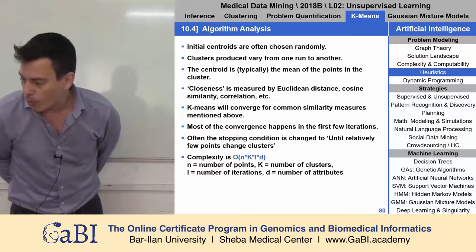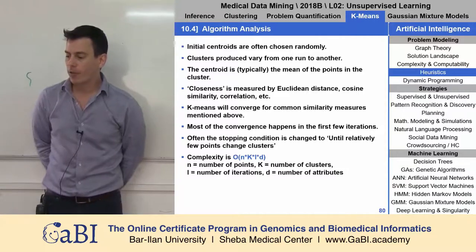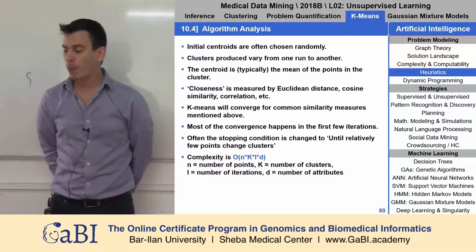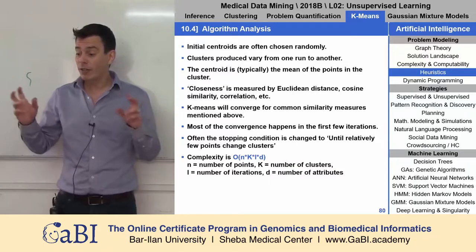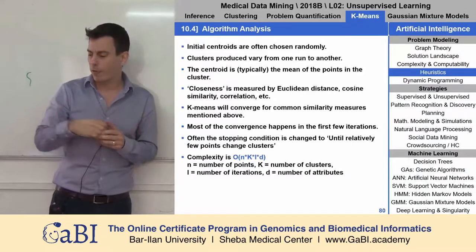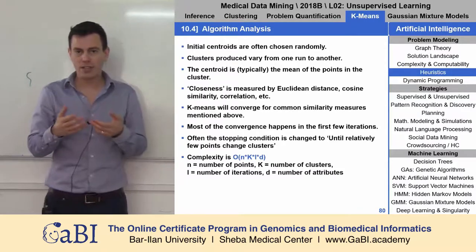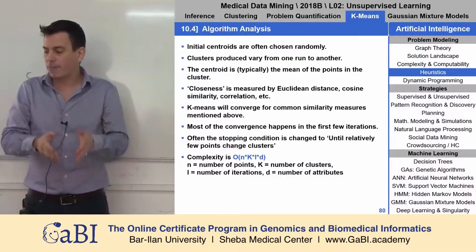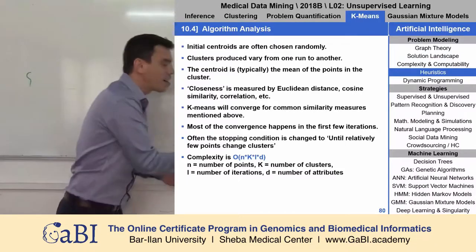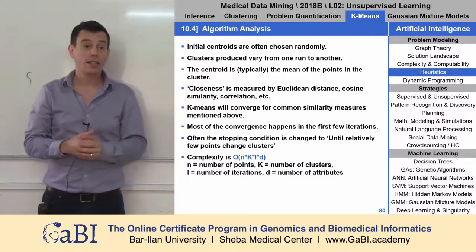K-means will converge for the common similarity measures mentioned. Most of the convergence happens in the first few iterations, meaning this algorithm is very, very fast. Often the stopping condition is changed to until relatively few points change clusters — we don't need all the points to be fixed. The complexity is just the number of points times the number of clusters times the number of iterations times the number of attributes. This is linear time — linear complexity, no squares or powers. Very fast.